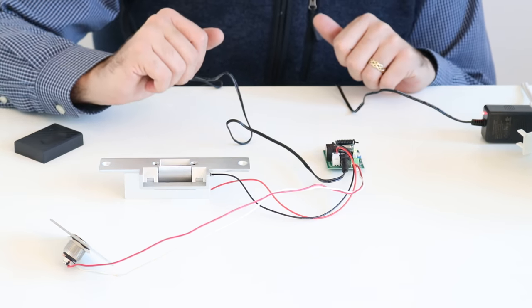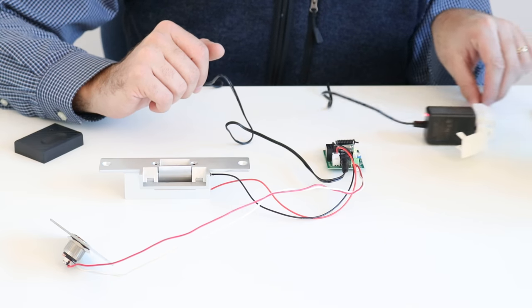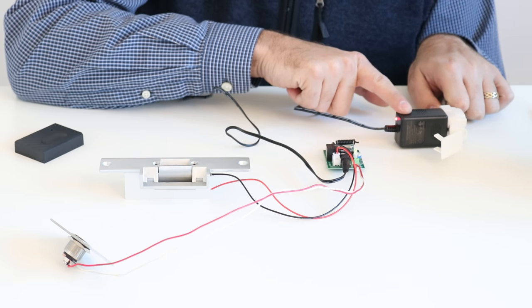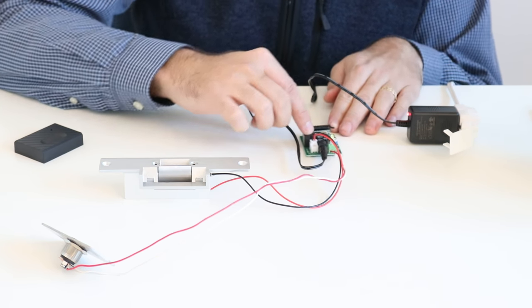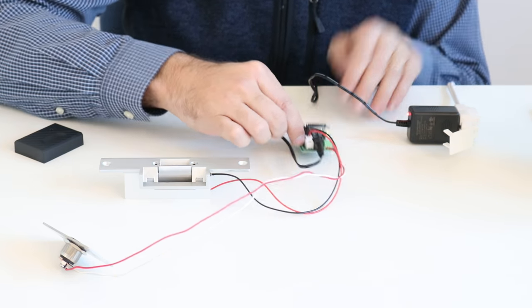Here is the close-up of this electric strike system. You can see we've got the power supply over here, and that power supply is then routed to our control board right here.